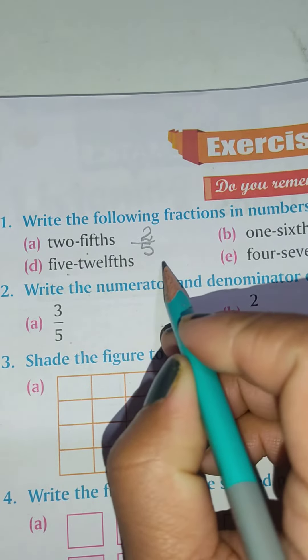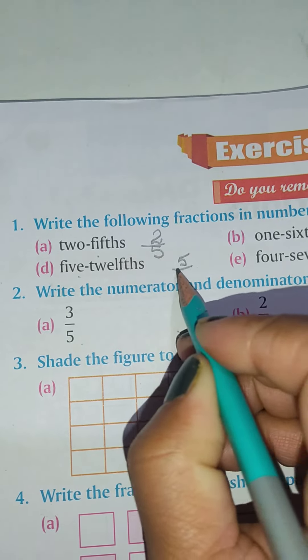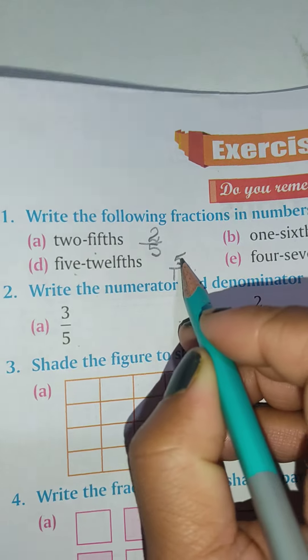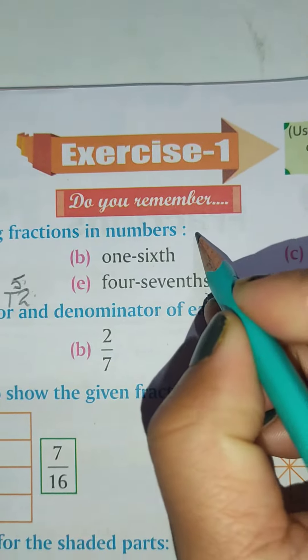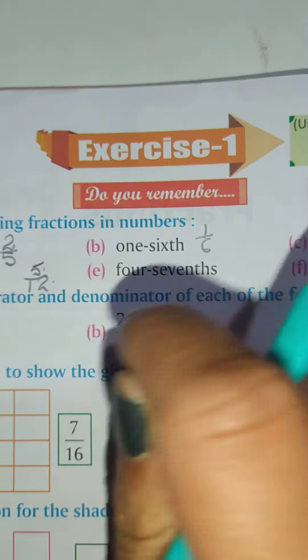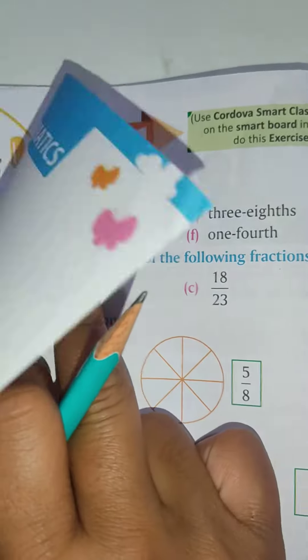Five-twelfths, so 5 upon 12. Twelfth will be your denominator, 5 will be your numerator. One-sixth, so 1 upon 6. I hope you will do the rest three yourself.